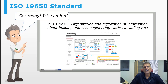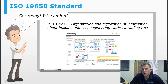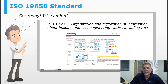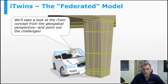We're going to get into the ISO 19650 standards and similar standards for organization, digitization, and building and civil engineering works, including BIM. Basically, what's happened in BIM is coming to civil infrastructure, particularly road corridors and rail corridors — and we're ready. We've got some really interesting things to share with you.